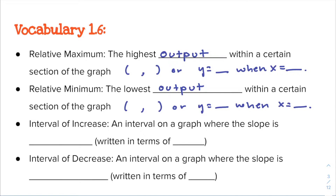In pre-calc you'll be writing them more as ordered pairs, but in calculus you would write it the alternate way, so I'm telling you both. Interval of increase is an interval on the graph where the slope is positive, and it is written in terms of x. Interval of decrease is an interval on the graph where the slope is negative, and it's written in terms of x as well.